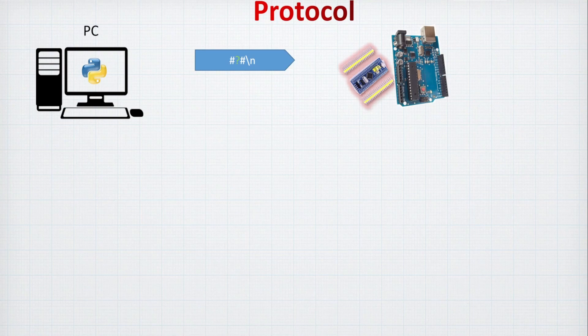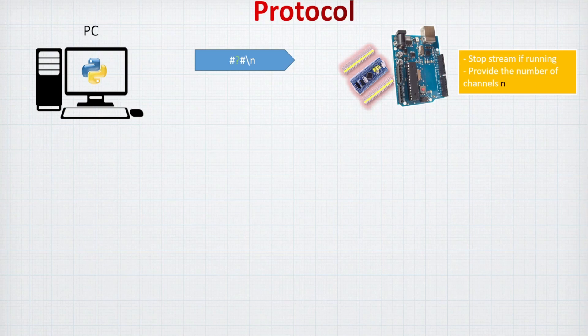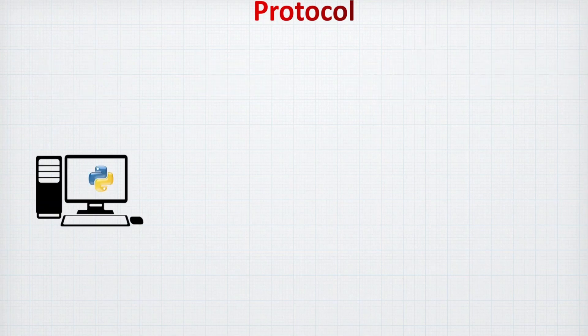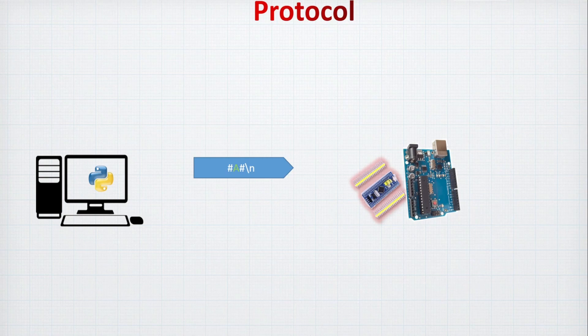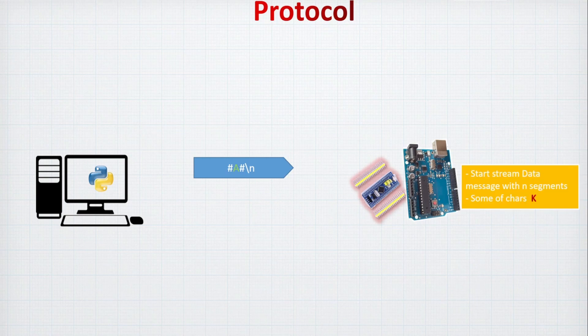The protocol is simple but we must respect it carefully. First, the PC will send: hashtag, question mark, hashtag, newline to the microcontroller. The microcontroller will stop any running stream and reply with the number of channels - how many channels of data it will be sending to Python. The next step: when Python wants to start streaming, it will send hashtag A hashtag newline. I used A because it stands for ADC, but you can choose any letter as long as you're consistent with your protocol. The microcontroller will then start streaming data.